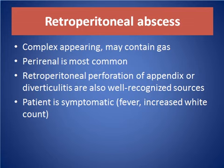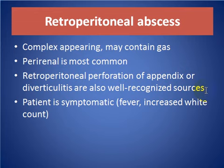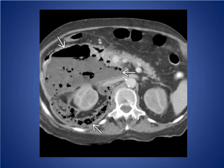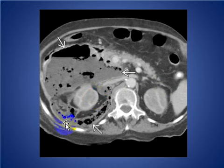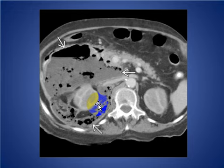Retroperitoneal abscess: complex appearing, may contain gas. Perirenal location is most common; perforation of appendix or diverticulitis are also recognized sources. The patient is symptomatic with fever and increased white cell count. Here we see axial contrast-enhanced CT with a large abscess in the retroperitoneal region due to duodenal perforation caused by undiscovered cholecystectomy and biliary stone extraction.